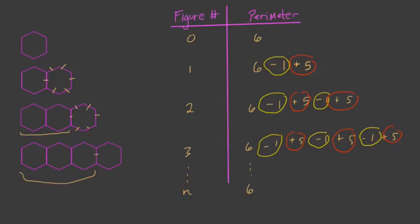And now what this does, it allows us to connect the figure number to the perimeter. Because for any figure number we have, we subtract n ones. So six minus one times n. And then we add, right? We add n fives, plus five n. So just to reiterate what's happening here, and this simplifies, of course, to six plus four n, our final expression. And we can test that in a moment.